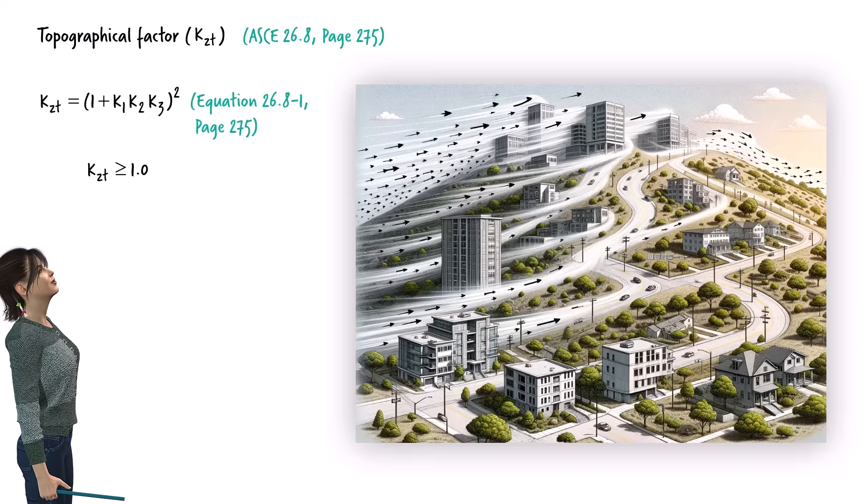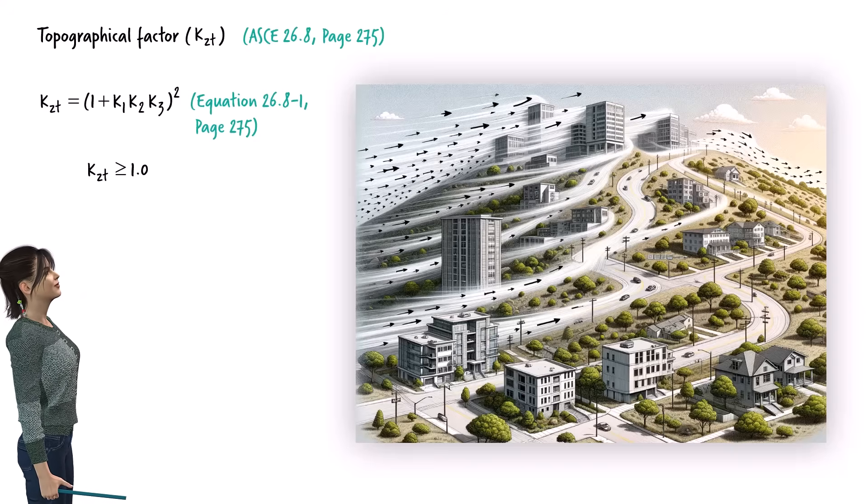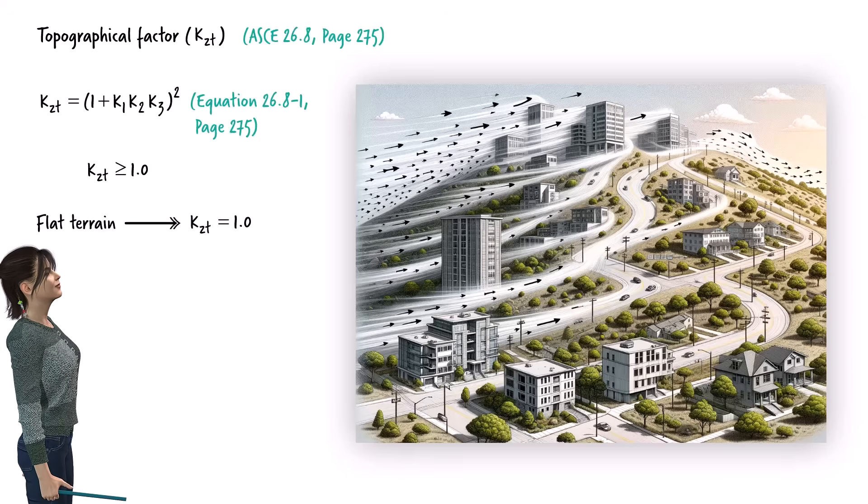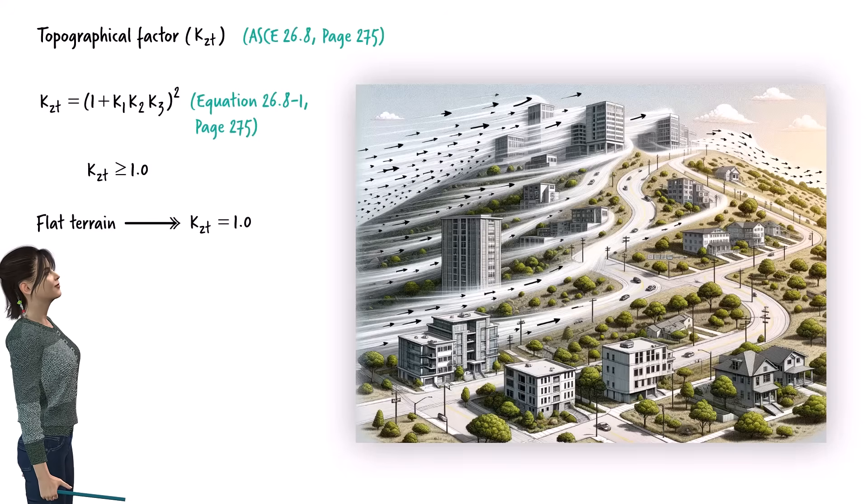Since our building is on flat terrain, we can set the topographical coefficient to 1.